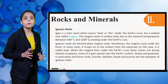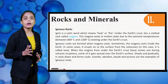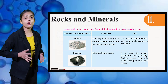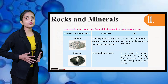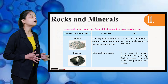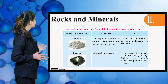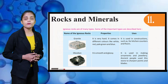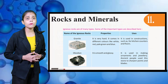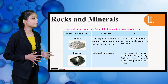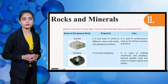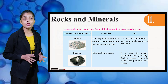Granite, Obsidian, Basalt, and Pumice are examples of Igneous Rocks. Igneous rocks are of many types; some important types are described here. You can see a table in which column one is the name of the Igneous Rock, column two is properties, and column three is uses.